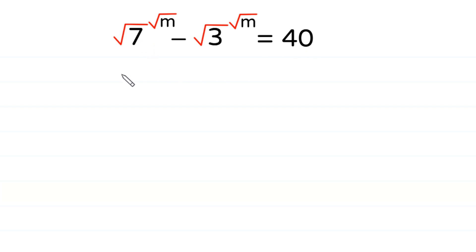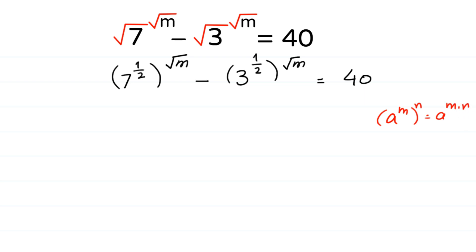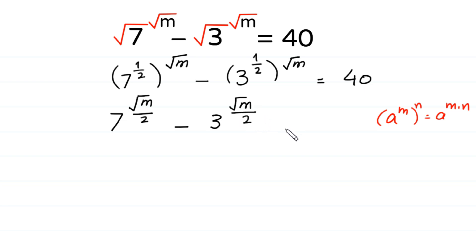We can write the square root of 7 as 7 to the power 1 over 2, whole to the power square root of m. Similarly, the square root of 3 can be written as 3 to the power 1 over 2, whole to the power square root of m, all equal to 40. Applying the exponent property, this gives 7 to the power square root of m over 2, minus 3 to the power square root of m over 2, equals 40.